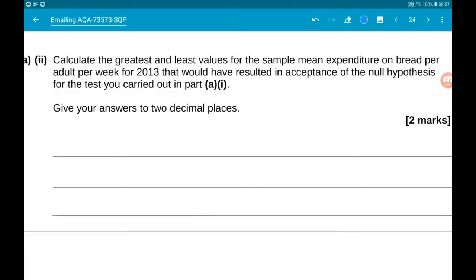Okay then, A part 2, or just calculate the greatest and least values for the sample mean expenditure per adult per week on bread in 2013 that would have resulted in acceptance of the null hypothesis in the test carried out in A1. Give your answer to two decimal places.